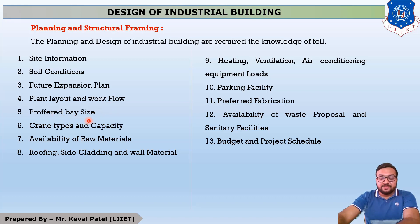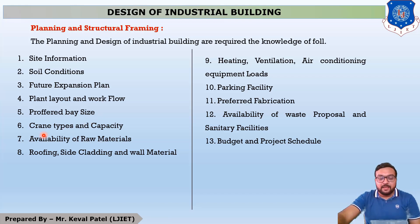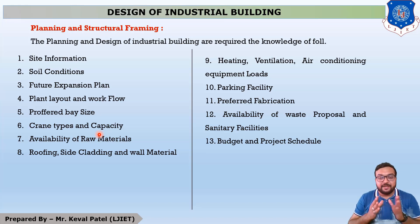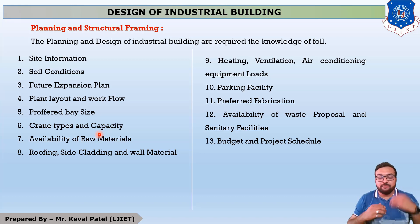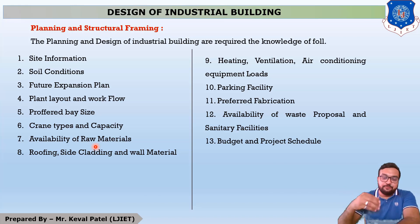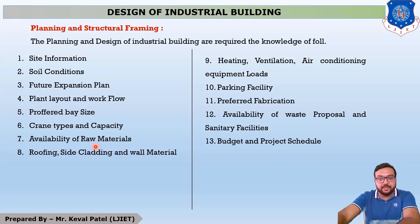Next is Preferred Bay Size. Bay means center-to-center distance between two columns. Next is Crane Type and its Capacity, which depends on the category of industry and the purpose for which you design. Next is Availability of Raw Material — if raw material does not come from a nearby area, transportation cost will be high. You should design or construct the industrial building where raw material is easily available. Next is Roofing, Side Cladding, and Wall Material.